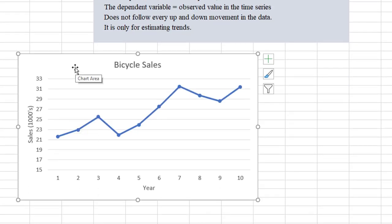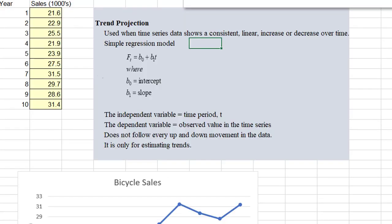We could see that these bicycle sales have mostly upward kind of trend, so it would make sense to try to fit a regression line on this. You already know that a simple linear regression model looks like this: y hat is equal to the intercept as b sub 0 plus the slope b sub 1 times x.